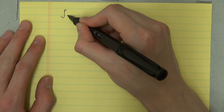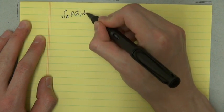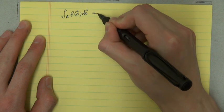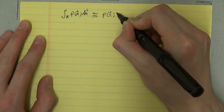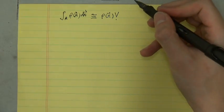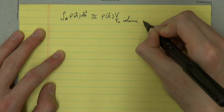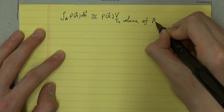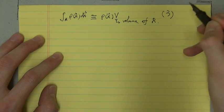So the integral over R of ρ(x⃗)dx⃗ is approximately ρ(x⃗)V. V is the volume of the region R. So we can call this equation 3.